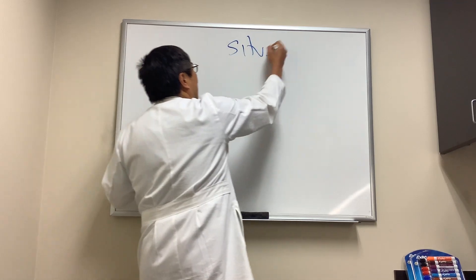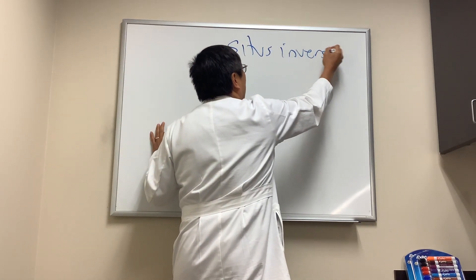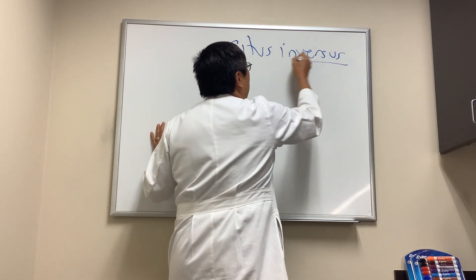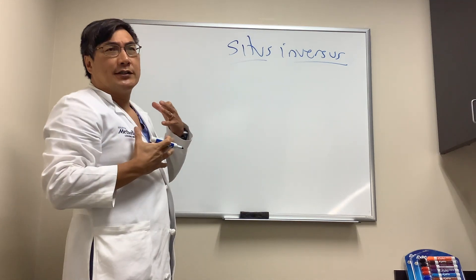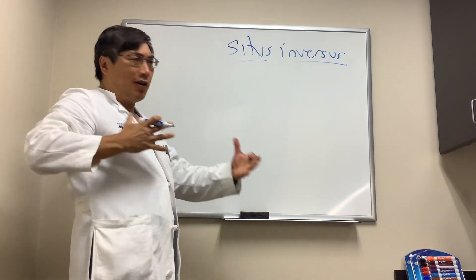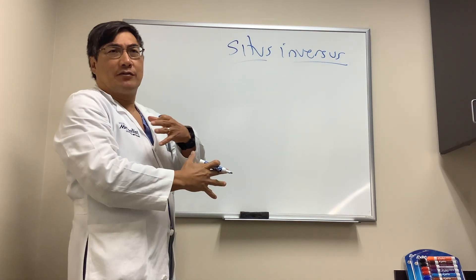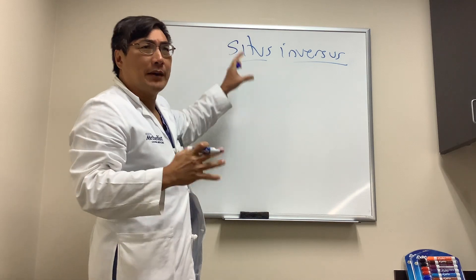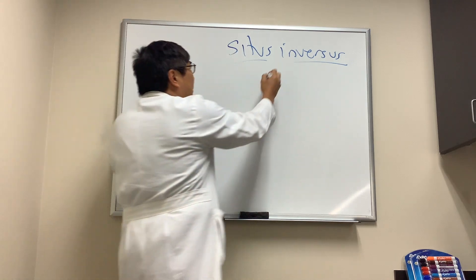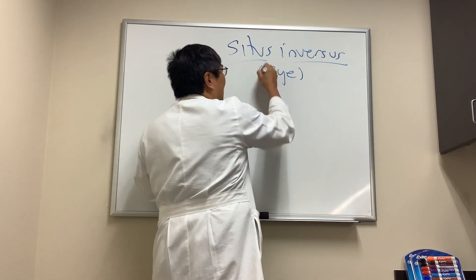Everyone wanted to know about situs inversus but for the eye. Of course, situs inversus can occur in other organ systems where you have the heart on the wrong side and other organs on the wrong side. That's not what we're talking about today because we're talking about situs inversus in the eye.